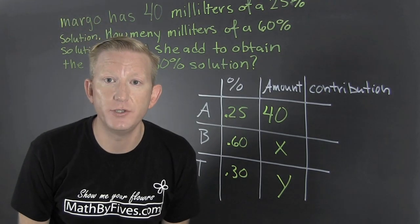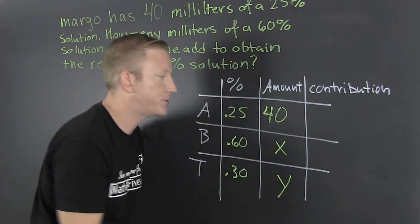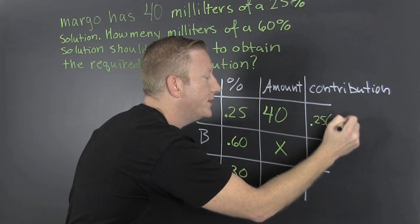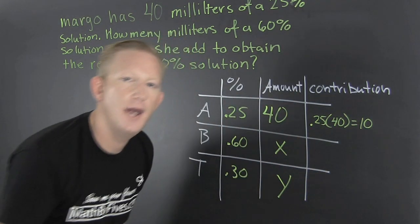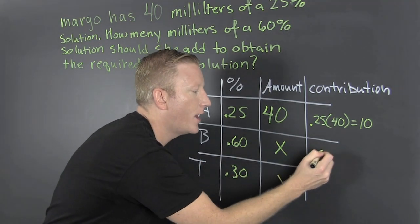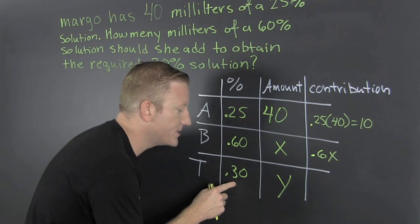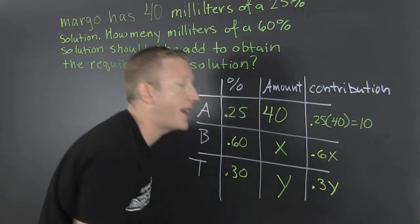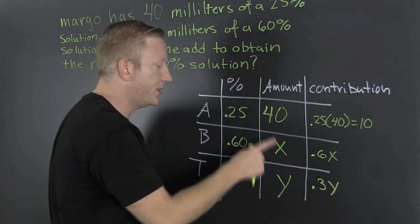When we're talking about contribution, we take the percent times the amount — that's the contribution. This is 0.25 times 40, which is a fourth of 40, or 10. Then 60% of X is 0.6X. And this is 30% of Y, which is 0.3 times Y. This gives us two equations with two unknowns.